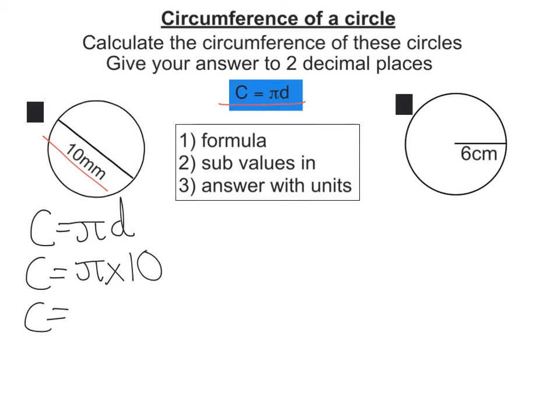Put that into our calculator and you should get 31.4159 etc. Now it wants the answer to two decimal places, so that means I keep all those, I'm touching round out round down. So C is approximately 31.42mm.